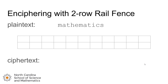In this first example we'll use the plain text message 'mathematics'. We start by creating a grid of two rails with 11 spaces. Then we zigzag the plain text letters starting in the top row and continuing until we run out of characters. So M would go in the top left box, then A would go down one to the right, and then back up to the top row for T, and so on.